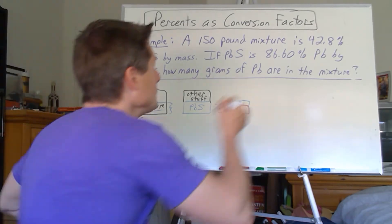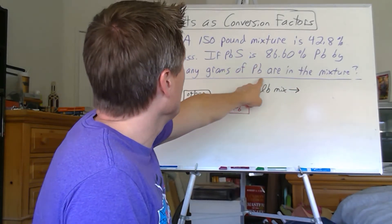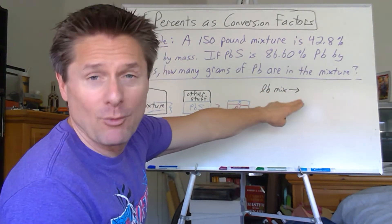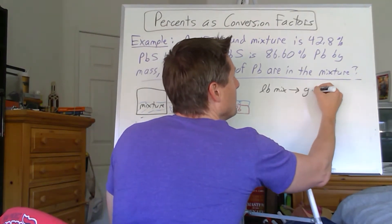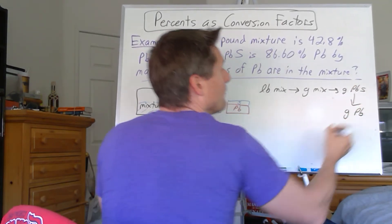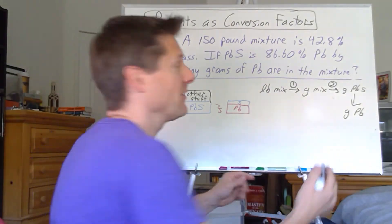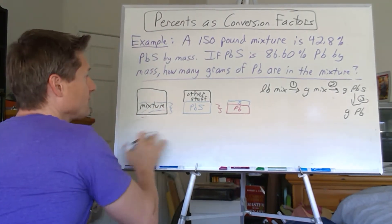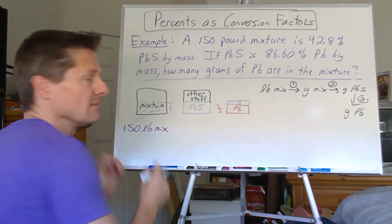This is going to be a multi-step calculation. We're going to go from pounds of mixture to grams of mixture, then to grams of the compound, and then to grams of lead. You can do the percentages in pounds or in grams — convert to grams first and do the percentages as grams, or do them as pounds and then convert to grams later. Let's convert to grams first. So we've got 150 pounds of the mixture.